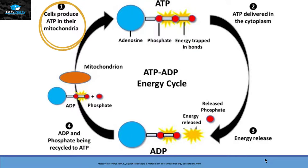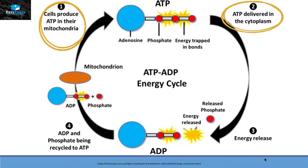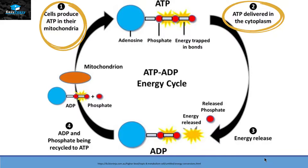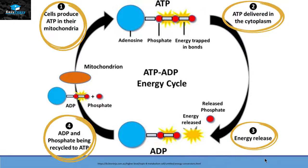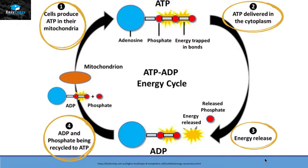The first step is that the cell produces ATP in their mitochondria, and then this ATP gets delivered inside the cytoplasm. Inside the cytoplasm, this ATP is going to couple itself with some endergonic reactions, and then it will convert itself into ADP and inorganic phosphate with the release of energy. The fourth and last step is that ADP and inorganic phosphate will get recycled to make ATP.